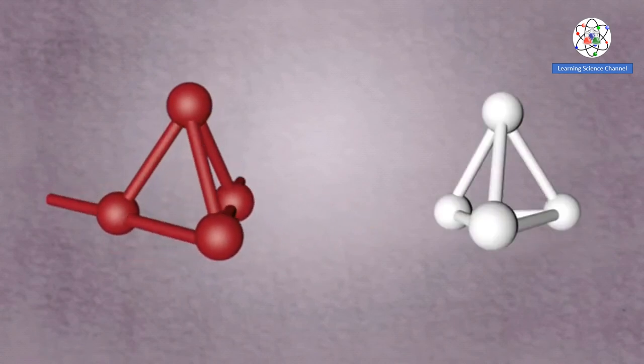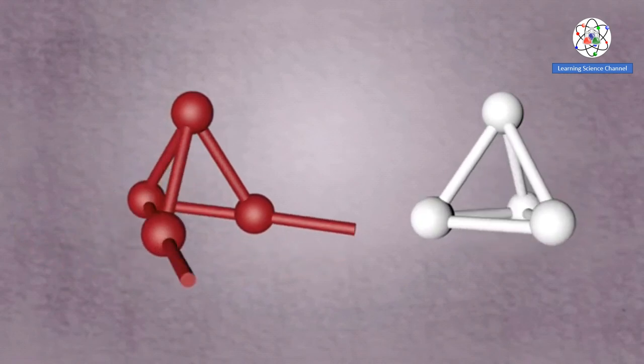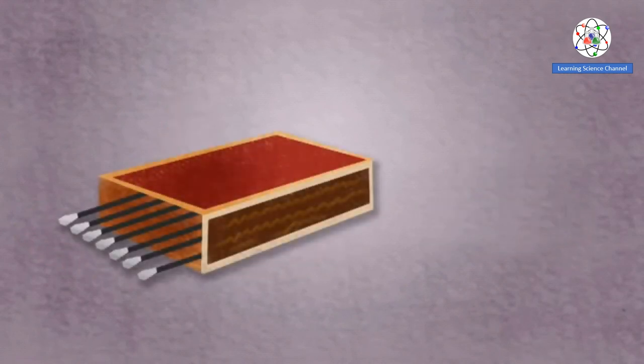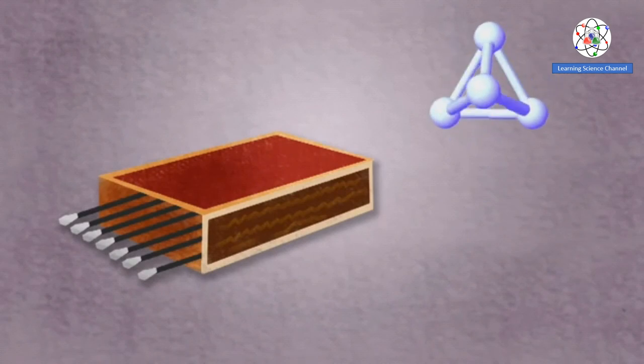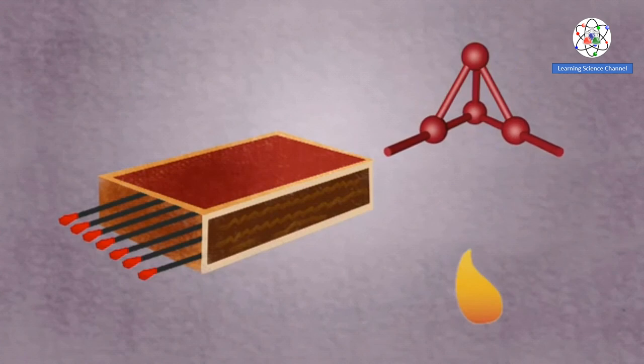These different colors arise from their different structures. These strike anywhere matches could be struck anywhere for ignition. But since this allotrope of phosphorus is significantly more flammable, it was very dangerous to use and have been slowly replaced with red phosphorus.